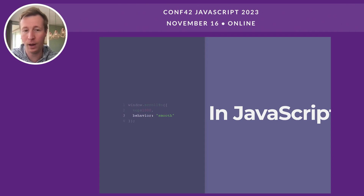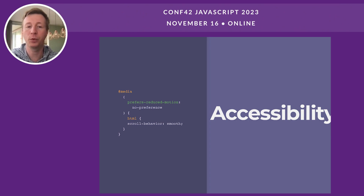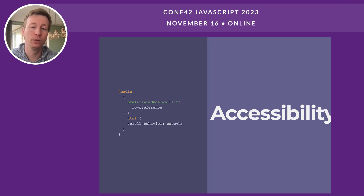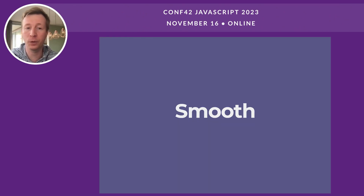One important accessibility consideration: while jumping from one part of the page to another is jarring for most people, for people with vestibular disorders it's the scrolling itself that can cause problems, making them nauseous. Browsers have a way of catering to these users with the `prefers-reduced-motion` media query. The correct approach is to only set smooth scrolling when the user doesn't mind motion — set it within `@media (prefers-reduced-motion: no-preference)` so those who need reduced motion get instant jumping instead.